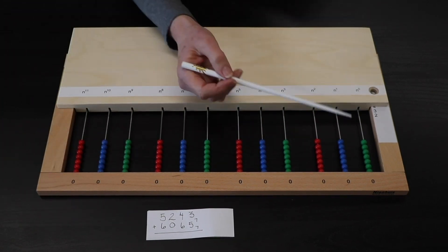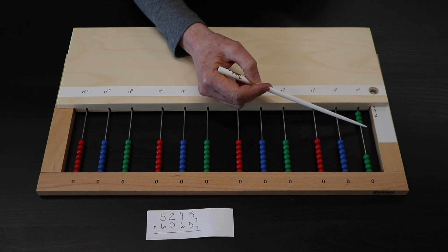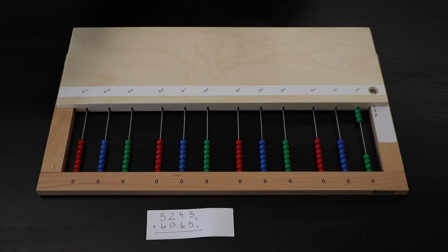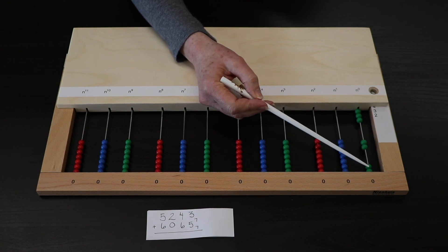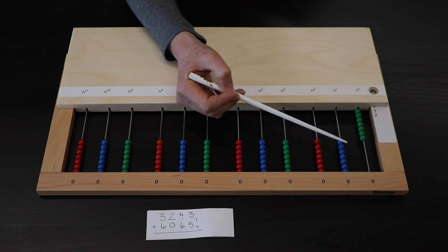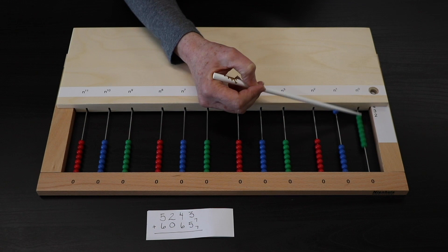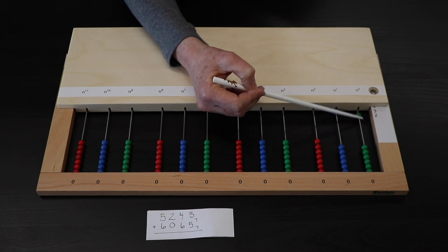First, we're going to start with a 3, and then we're going to add 5 more. 1, 2, 3, 4, exchange, and 5.